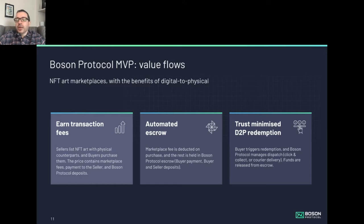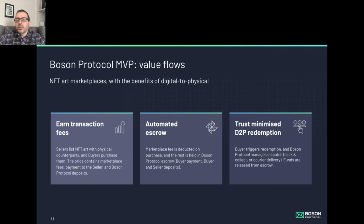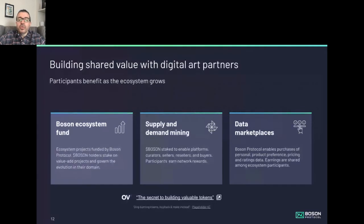What this means is we have this trust-minimized digital to physical redemption. As a decentralized protocol building this ecosystem, we're working with our early partners to actually build incentives into Boson Protocol in the form of network rewards for supply and demand mining. If your marketplace or dApp brings supply and or demand to Boson Protocol, there are crypto-economic rewards from within the protocol, and those incentives are stronger the earlier you join and the more supply and demand you deliver.